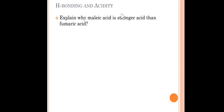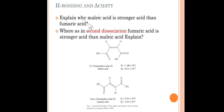A very famous question on hydrogen bonding and acidity: explain why maleic acid is a stronger acid than fumaric acid in first dissociation. Maleic acid and fumaric acid are the same compound except one is cis and the other is trans — maleic acid is cis and fumaric acid is trans. In first dissociation, maleic acid is more acidic, while in second dissociation, fumaric acid is more acidic.